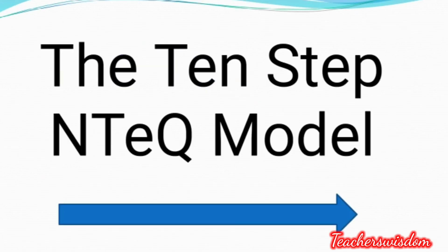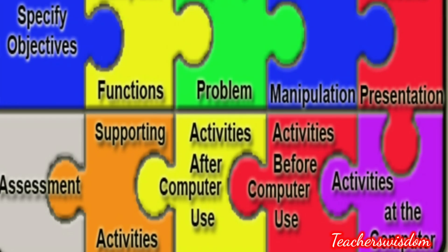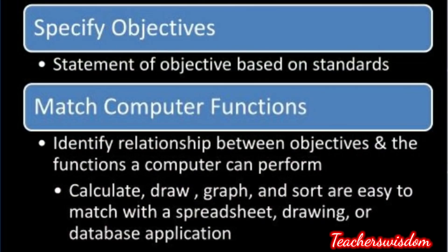Now we will discuss the 10 steps of the N-Tech model one by one. The first step is to specify the objective. The first step in the N-Tech model is to specify the objective for the teaching-learning process, based on national, state, or local standards for curriculum and technology use. The objective should cover all instruction for the unit or lesson, not just information related to the computer component. A lesson can also cross disciplines, either in your own classroom or as part of a team-teaching project.